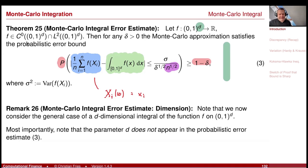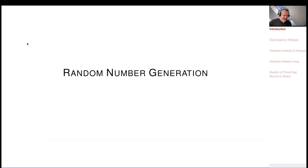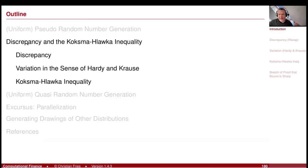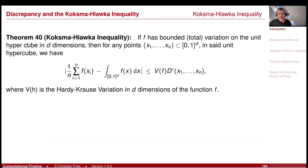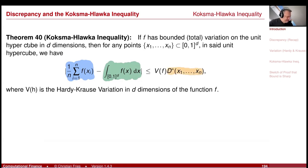That was our sequence of random numbers. Now we are moving to the Koksma-Hlawka inequality. This inequality removes the defect that we have to estimate only in probability. As a teaser: the deviation of our Monte Carlo approximation from the true integral can be estimated by two properties — the discrepancy, a property of the sequence (taking the place of 1/√n), and the variation of the function — with no probability involved.